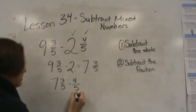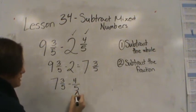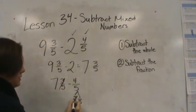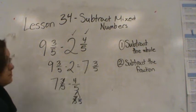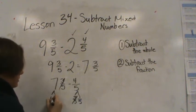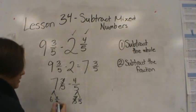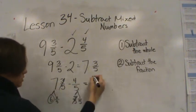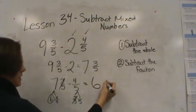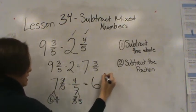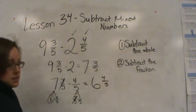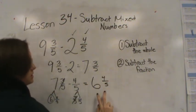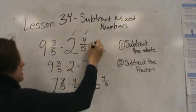Let's decompose this 4/5 into 3/5 and 1 more fifth. 3/5 minus 3/5 is nothing. So then I regroup the 7 to get 6 and 5/5. 6 becomes your whole, and 5/5 minus 1/5 is 4/5. So my final answer is 6 and 4/5.